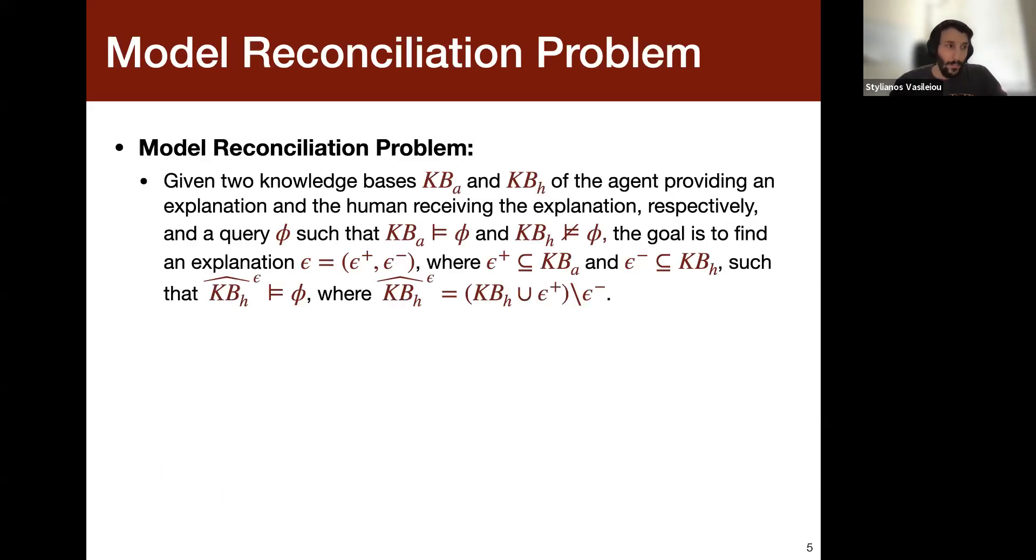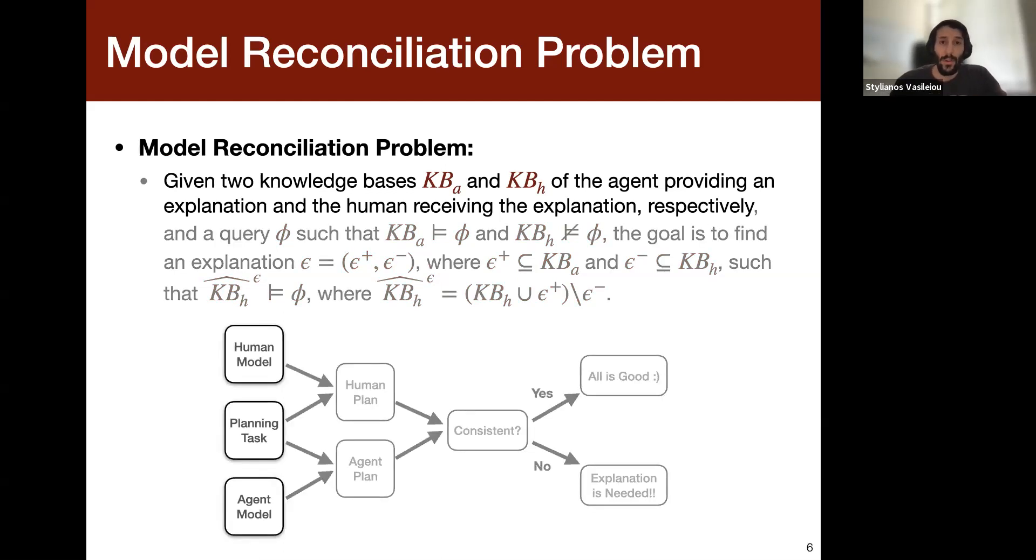So now we have reformulated this model reconciliation problem as a logic-based problem. Basically, now the two models of the agent and the human will be represented as knowledge bases, encoding the planning task. And then the agent's plan will be the query, which is entailed by the agent's knowledge base, but not entailed by the human's knowledge base. And the goal in our formulation is to find an explanation, which is a tuple, basically what we want to add to the human's knowledge base and what we want to remove if what we add is inconsistent with the knowledge base, such that the query is entailed when we update the knowledge base.